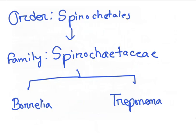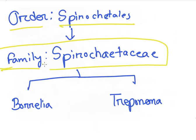One family Spirocheteia of the order Spirocheteia consists of 2 important genera whose members are human pathogens: Borrelia and Treponema.